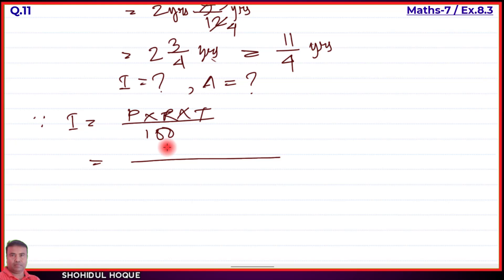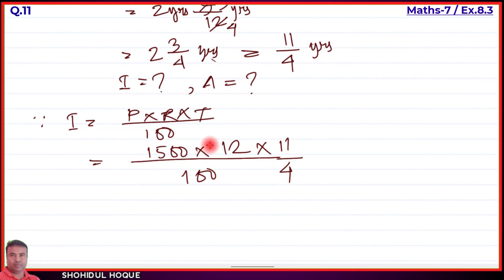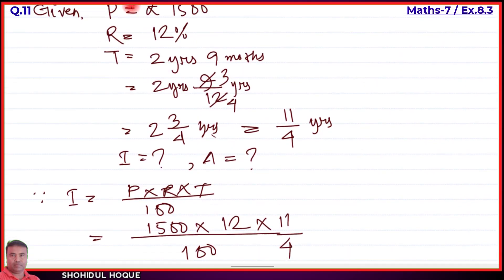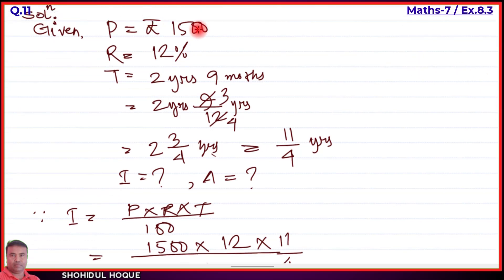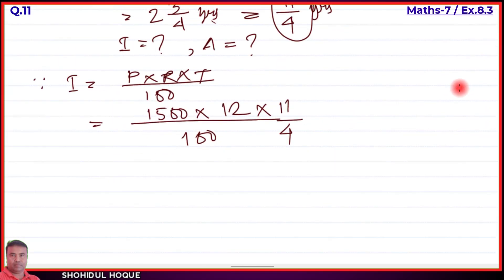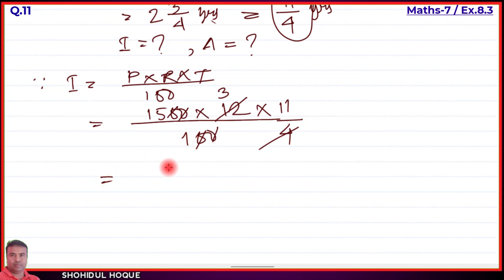Substituting values: I = (1,500 × 12 × 11/4) / 100. Simplifying: cancel zeros — two zeros from 1,500 and 100, and 4 into 12 gives 3. So we get 15 × 3 × 11.